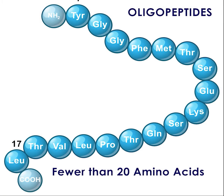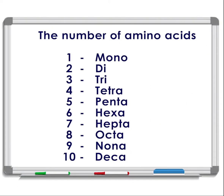Peptide chains of fewer than 20 amino acids are called oligopeptides and include dipeptides, which is two amino acids; tripeptides, three amino acids; tetrapeptides, four amino acids; and so on.